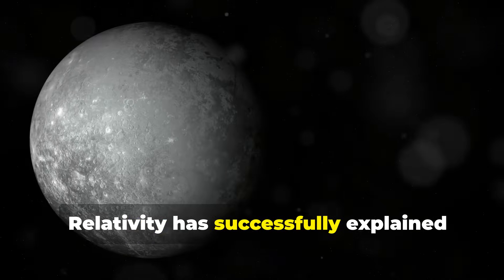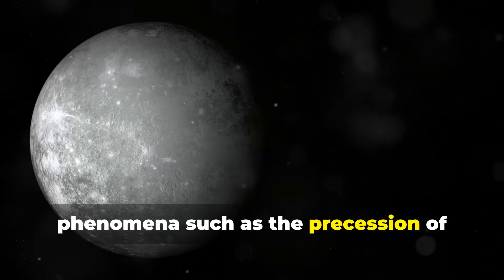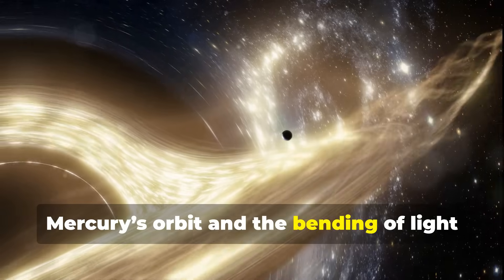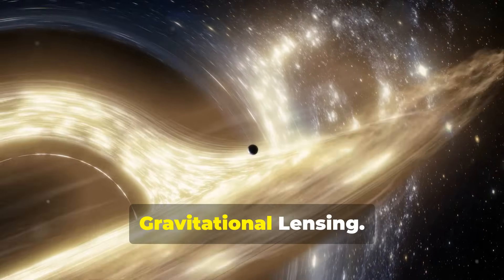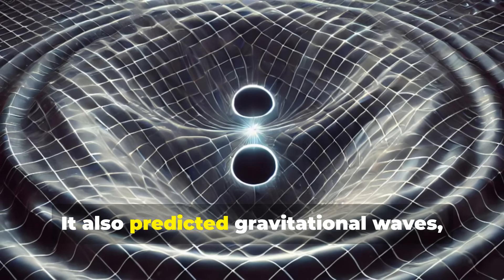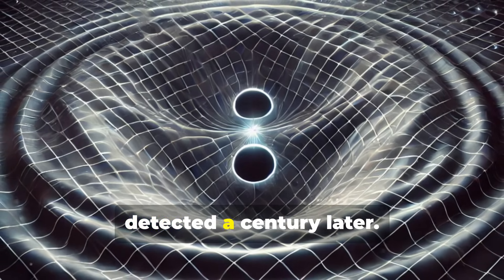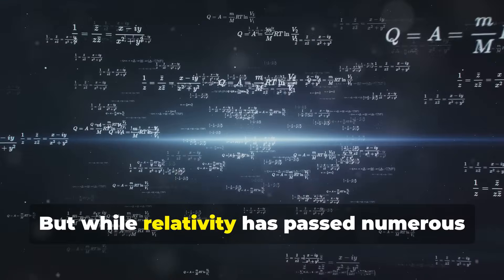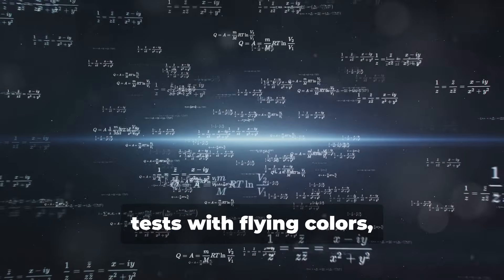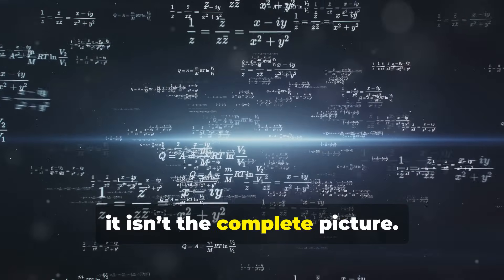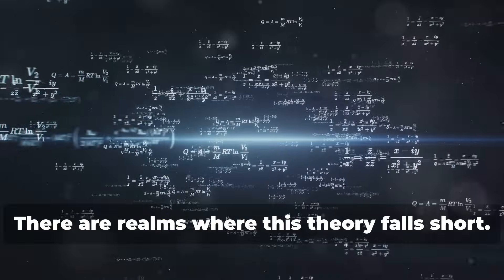Relativity has successfully explained phenomena such as the precession of Mercury's orbit and the bending of light near massive objects known as gravitational lensing. It also predicted gravitational waves, ripples in space-time that were directly detected a century later. But while relativity has passed numerous tests with flying colors, it isn't the complete picture. There are realms where this theory falls short.